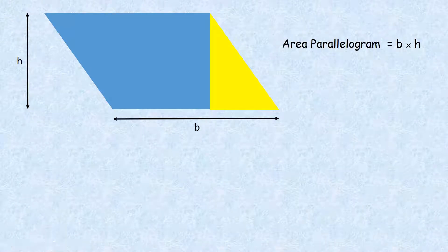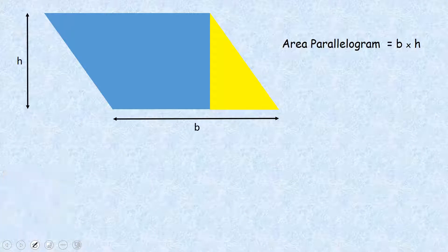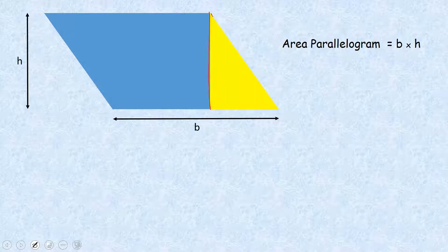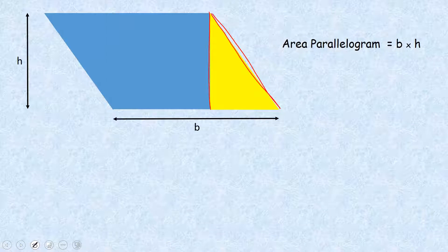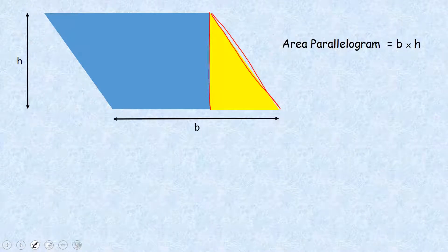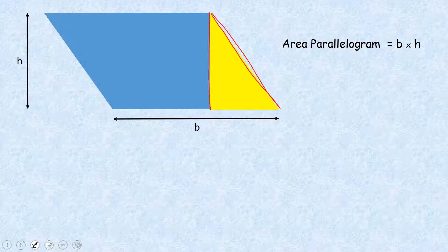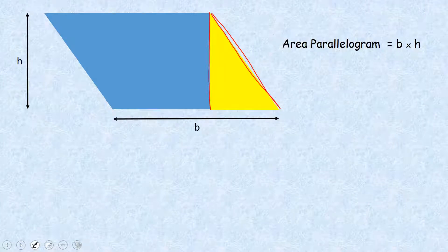That tells us the area of our parallelogram is just the base times the height, but remembering it's the vertical height. Our sloped sides — we don't take them into account at all when looking at area. If we were measuring perimeter we'd want to know the size of these sides, but for area we're just interested in the vertical height, from the top to the bottom.